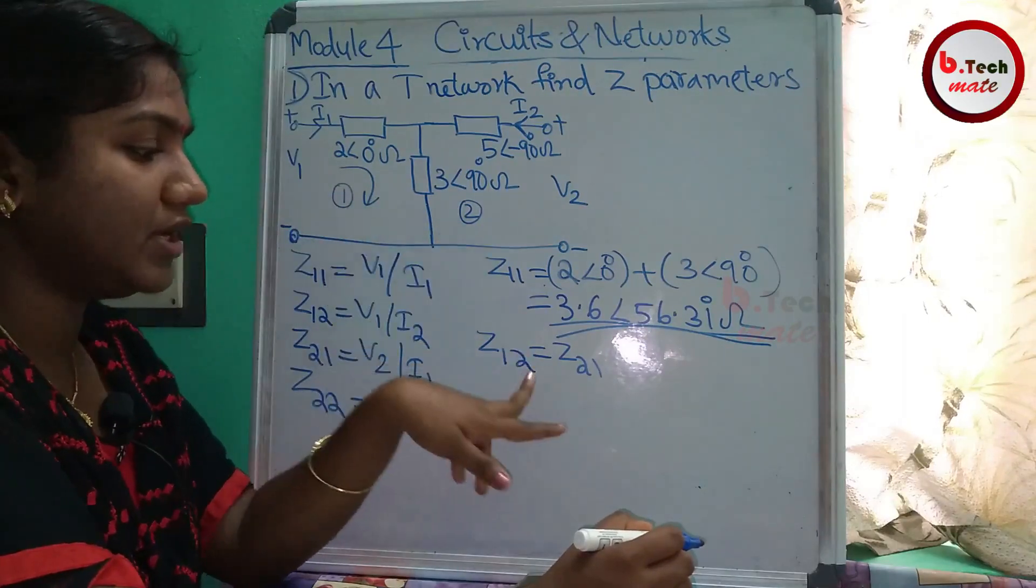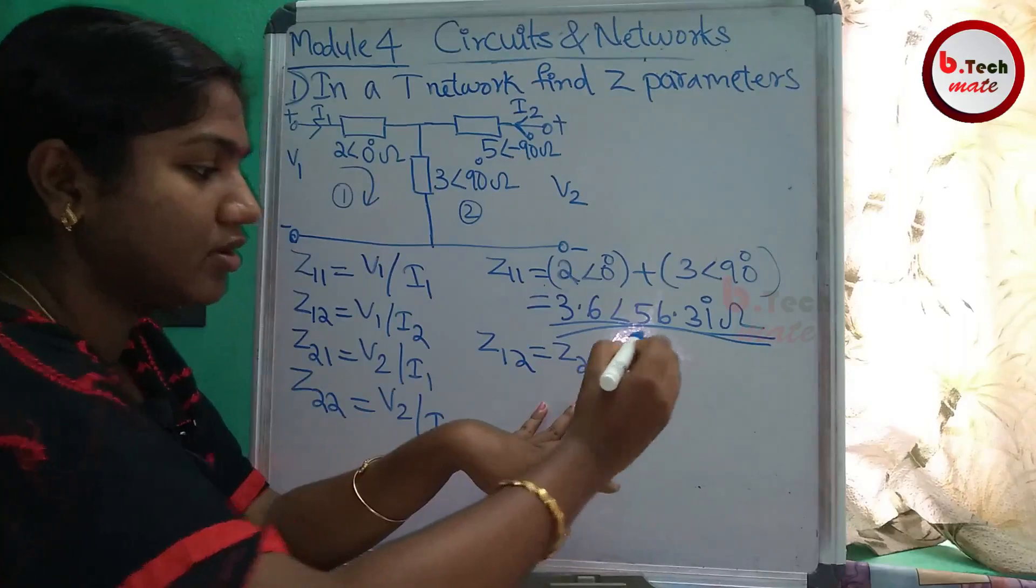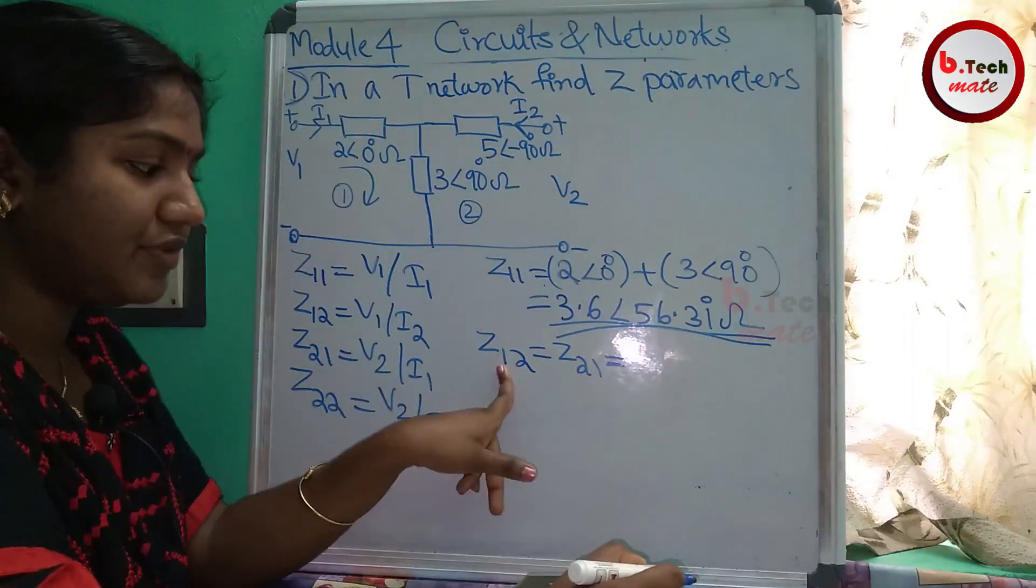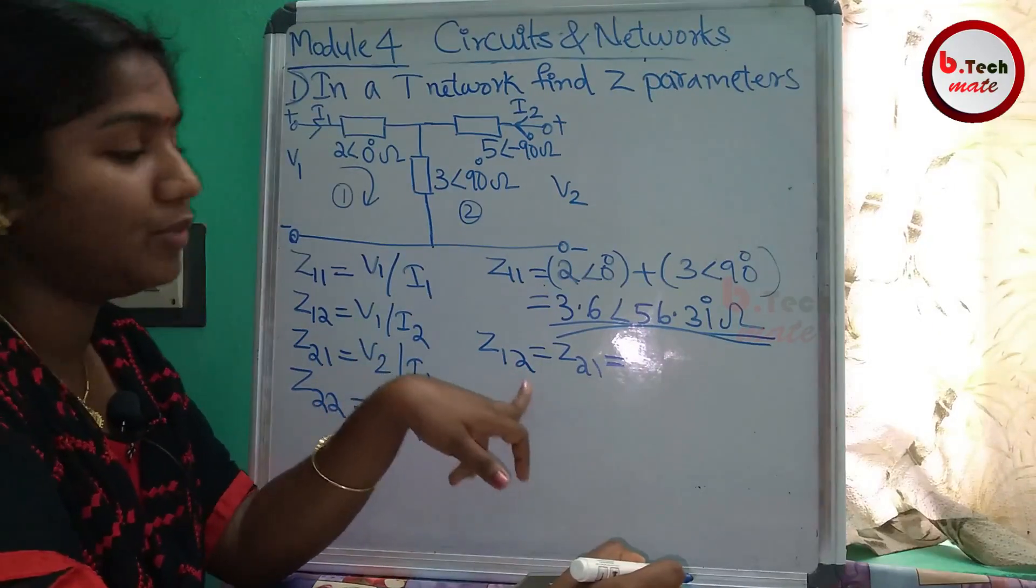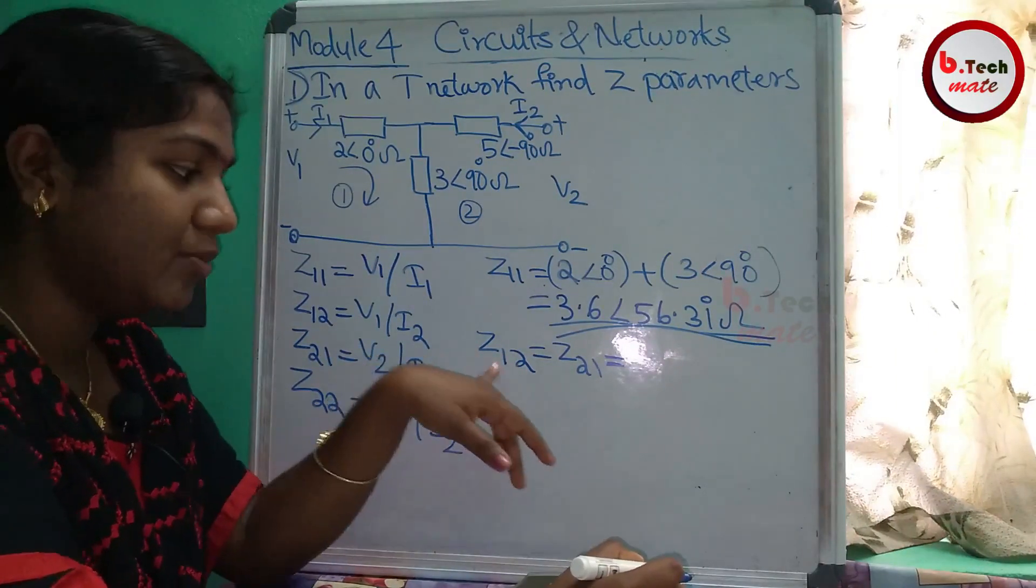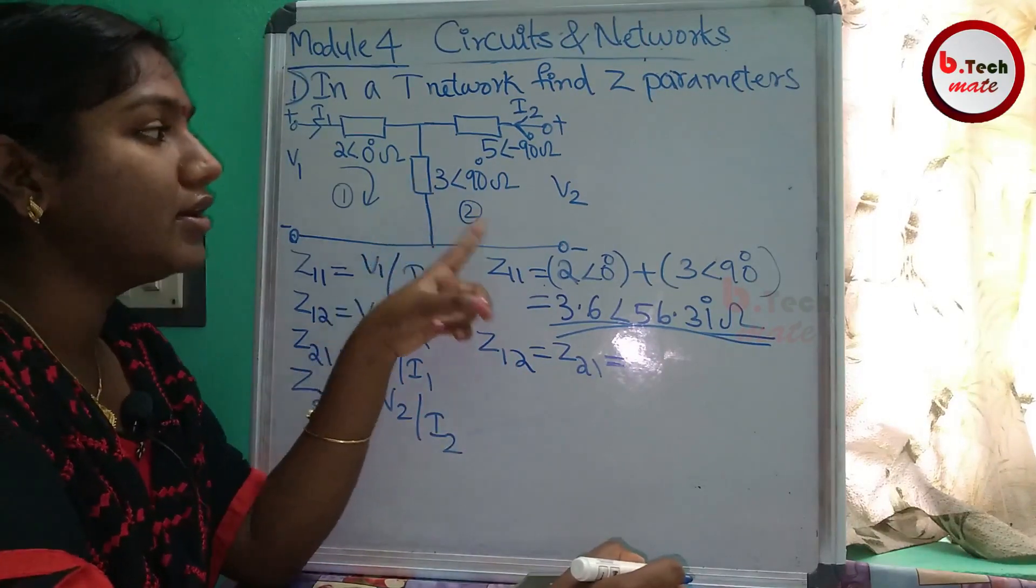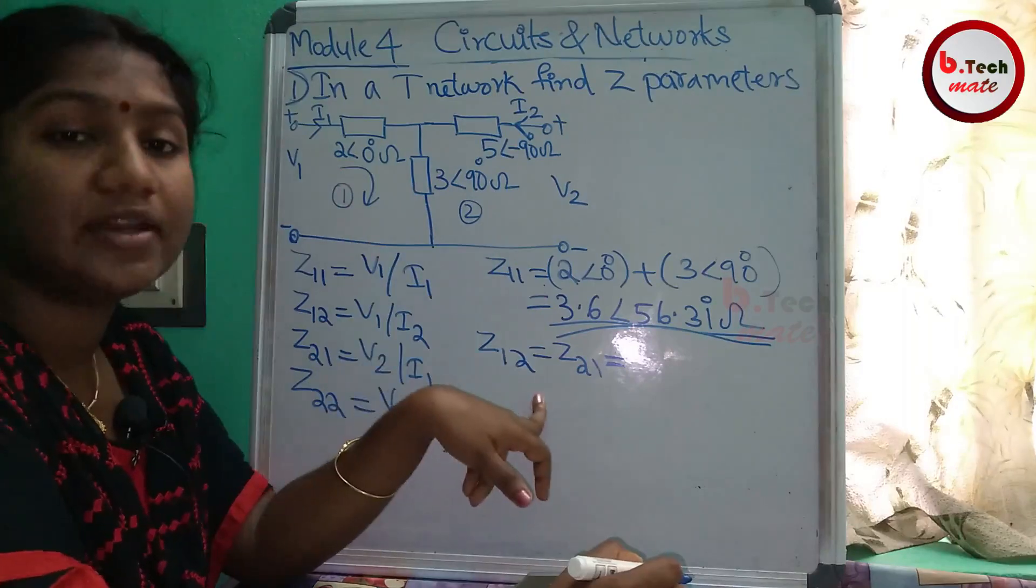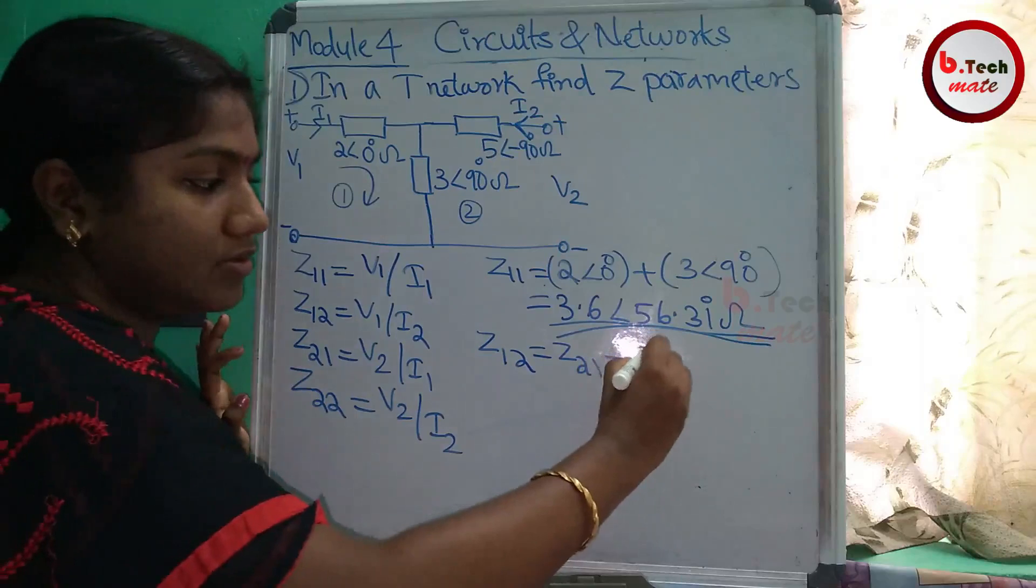Let's look at Z12. Now the suffix is 1,2 for Z12. For example, 1 and 2 are common. The first and second meshes are common. That is Z12. Now this is the T-Network.